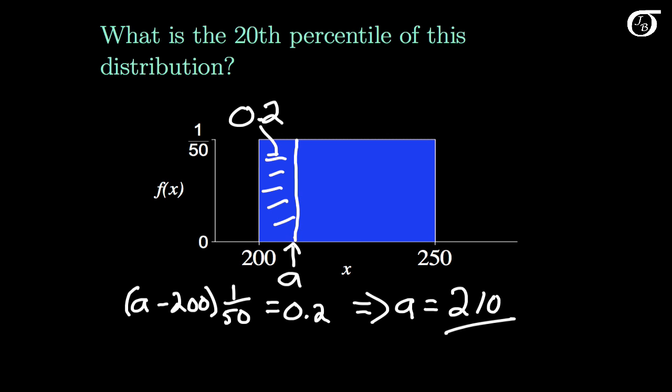For other continuous probability distributions, it's not going to be quite so easy to find areas and percentiles. We're going to have to use calculus and integrate the probability density function to find those areas and percentiles. But for the continuous uniform distribution, it's fairly straightforward as this reduces to simply areas of rectangles.